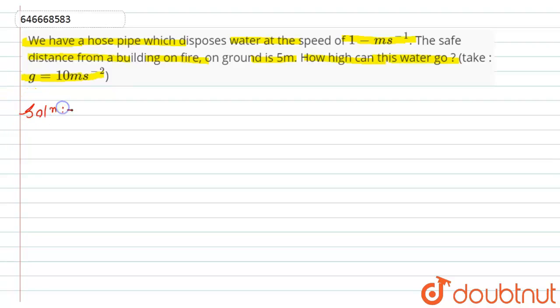So what is stated in the question - let's suppose a hose pipe which disposes water at a speed of 1 meter per second at this height. Let's suppose it disposes the water like this with speed of 1 meter per second, and let's say it makes an